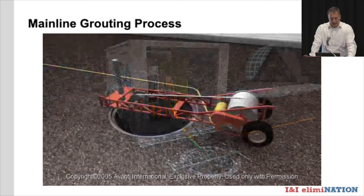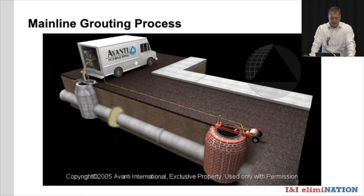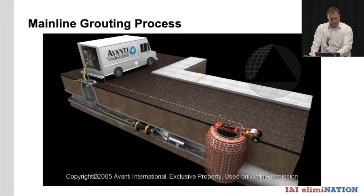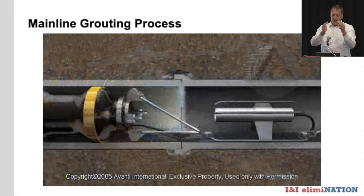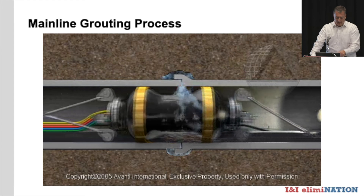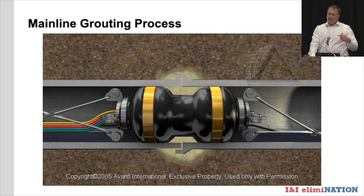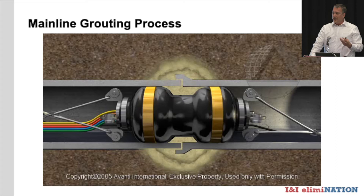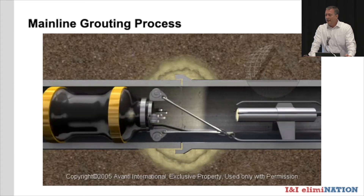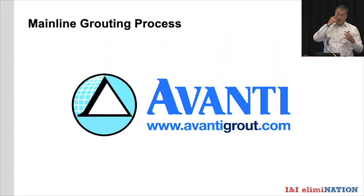Here's a quick animation of what the grouting process looks like. They use a push-pull packer — a dual inflated packer with a camera — and straddle the joint. The packer inflates and hoses connected to the truck push both components together. Once the A and B components touch, they create the gel. We're not just grouting the joint itself — we're creating a soil-gel matrix outside of the joint, depending on the soil type. That soil-gel matrix is what gives grouting its longevity.